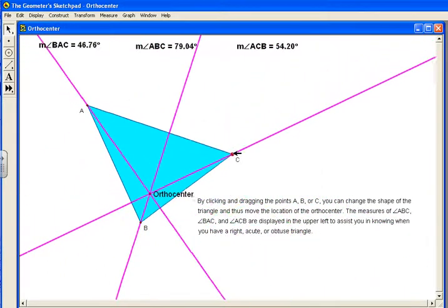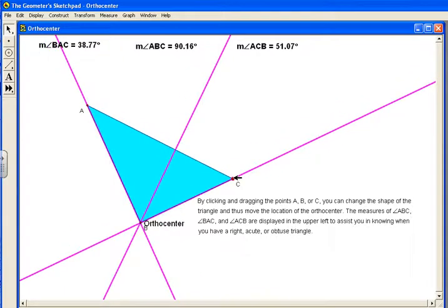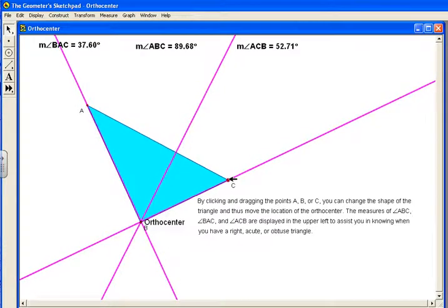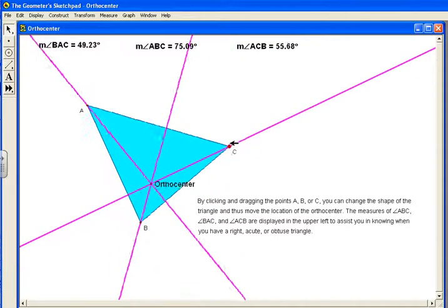Notice if I bring C all the way down here, I have a right angle. So when I get that 90-degree angle, you see that it matches up and the orthocenter becomes the vertex of that 90-degree angle.